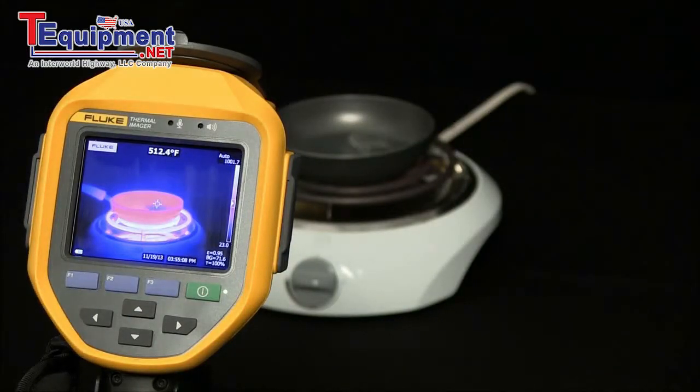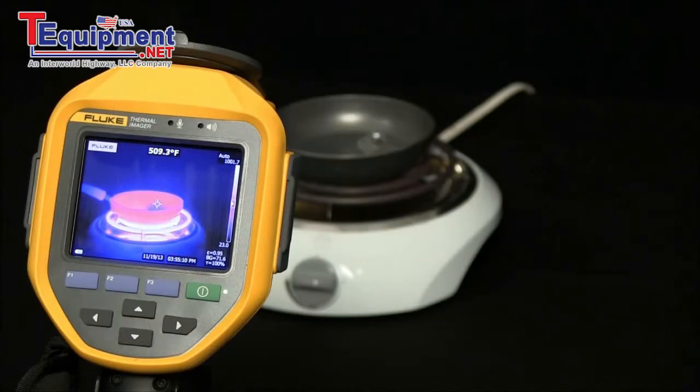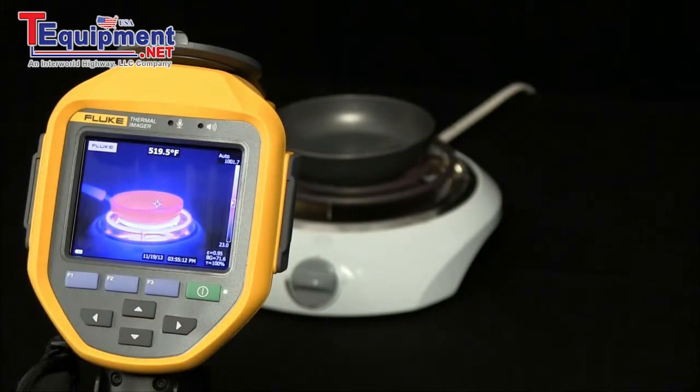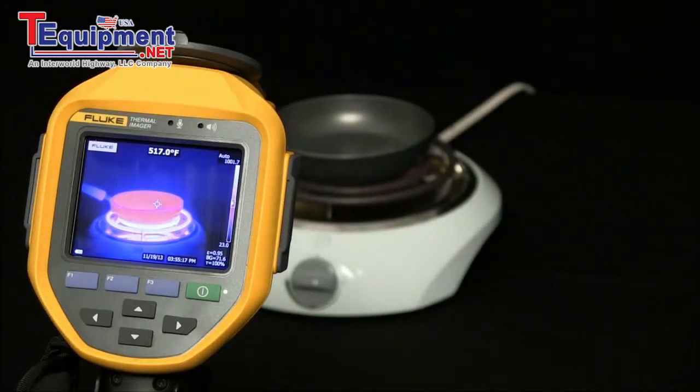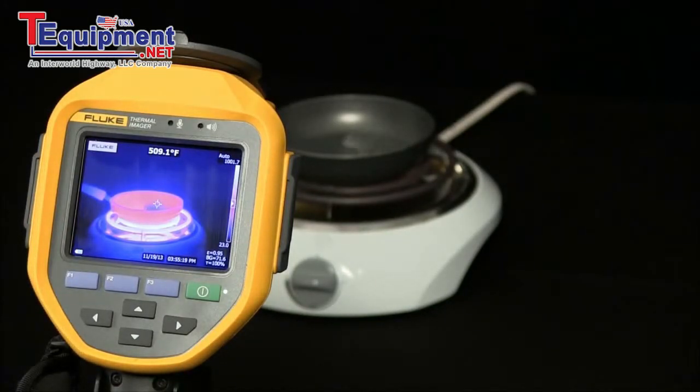This simplification does not work well on shiny surfaces such as the one that we're about to see, unpainted metals, as they have an emissivity of less than 0.6 or 60 percent. These materials are not good for radiating energy and are classified as low emissivity.